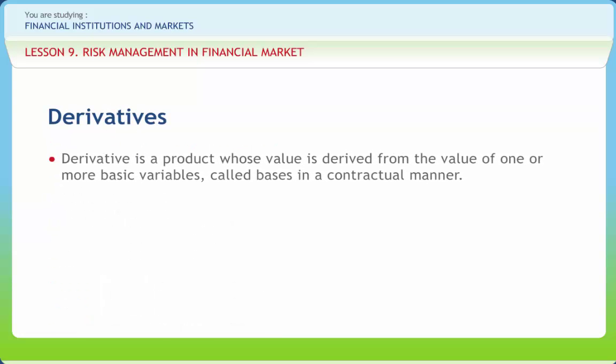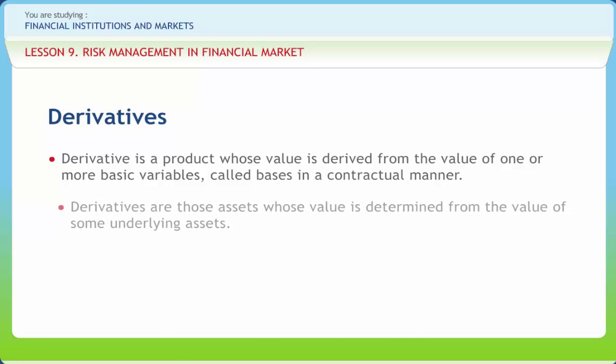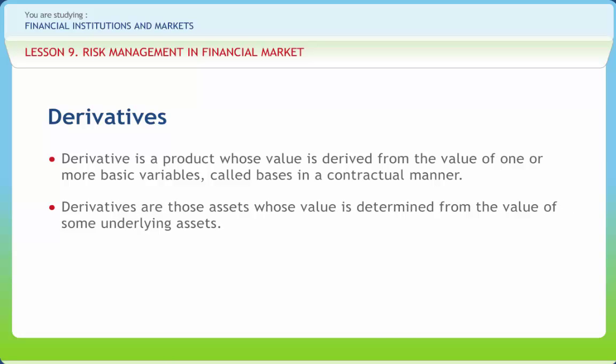A derivative is a financial instrument — or more simply, an agreement between two people or two parties — that has a value determined by the price of something else, called the underlying. Derivatives are those assets whose value is determined from the value of some underlying assets, linked to expected future price movements of assets such as a share or a currency.